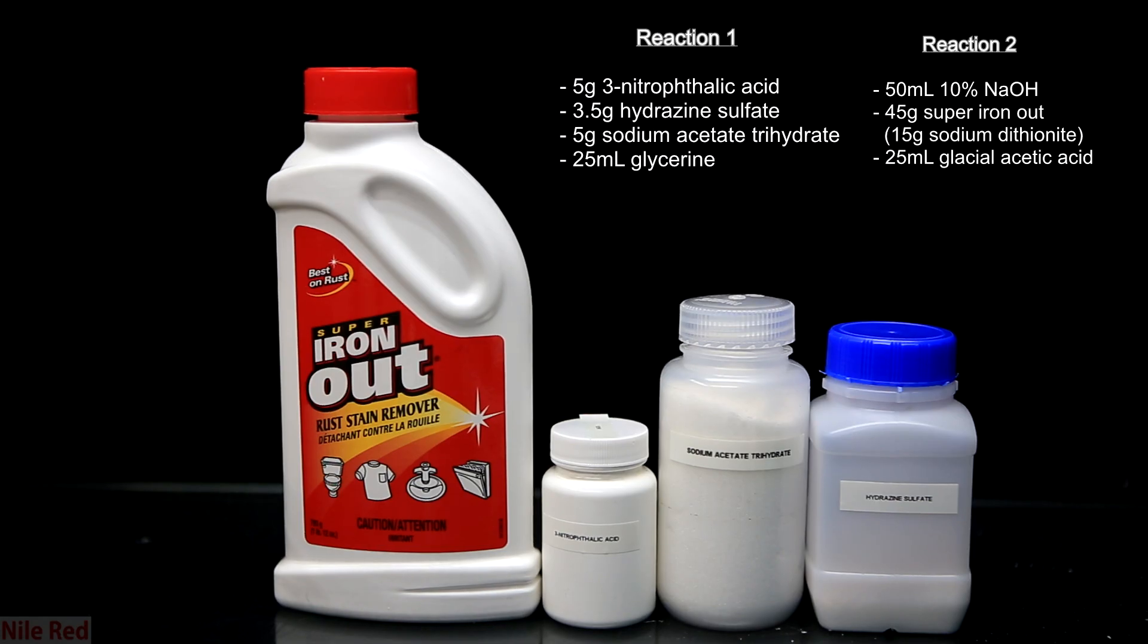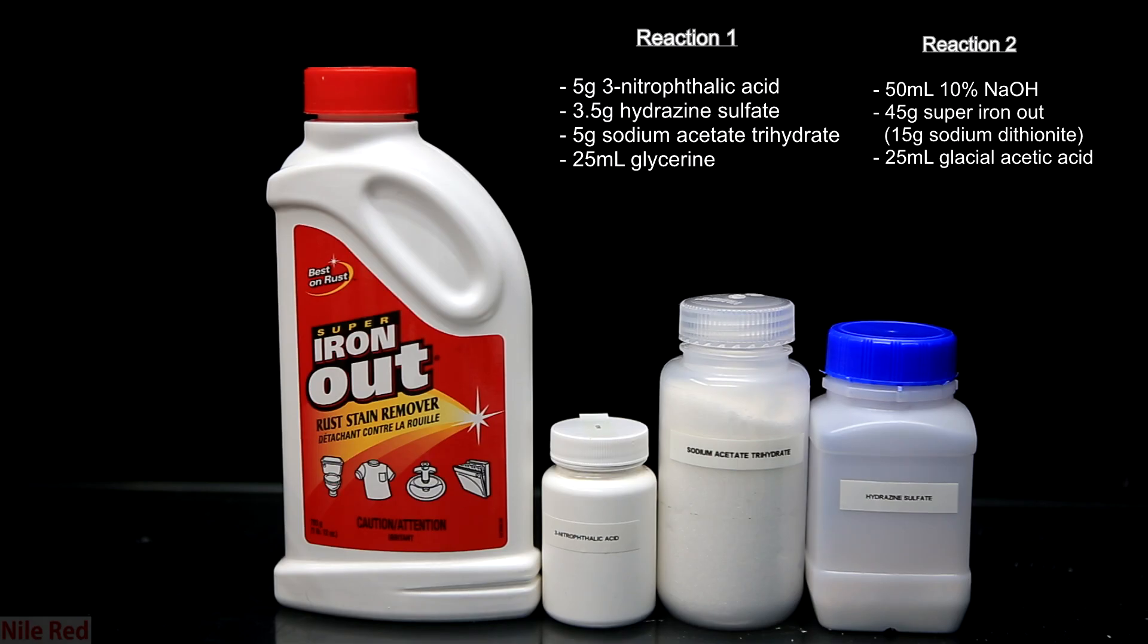We'll also need 25 milliliters of glycerin or glycerol, and like I said, I forgot to put it in this shot. For the second half and the synthesis of the actual luminol, I used 50 milliliters of 10% sodium hydroxide, 45 grams of the Super Iron Out product, and 25 milliliters of glacial acetic acid. The Super Iron Out acts as an over-the-counter source of something called sodium dithionite, and if you have a more pure source, you can use 15 grams of that instead.